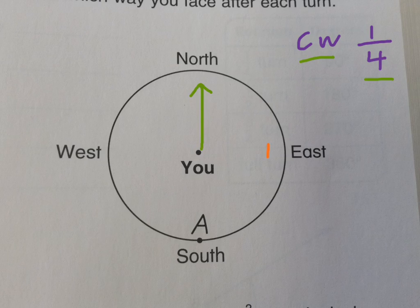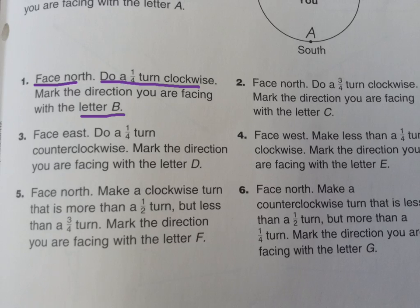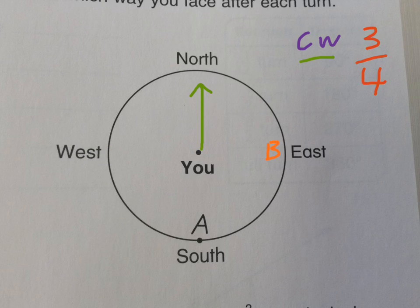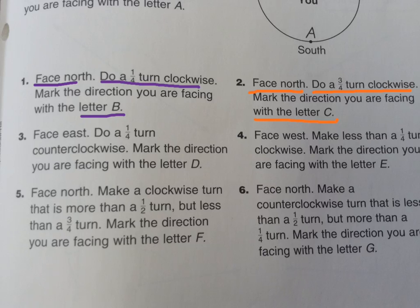Number two: we're still facing north, but this time we're doing a three-fourths turn clockwise and marking it with the letter C. Going clockwise three-fourths of a turn — one, two, three sections — and mark the letter C. Number three: we're facing east and doing a one-fourth, or quarter, turn counterclockwise.